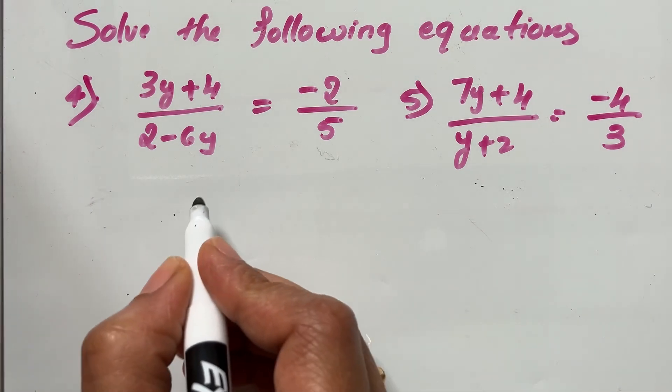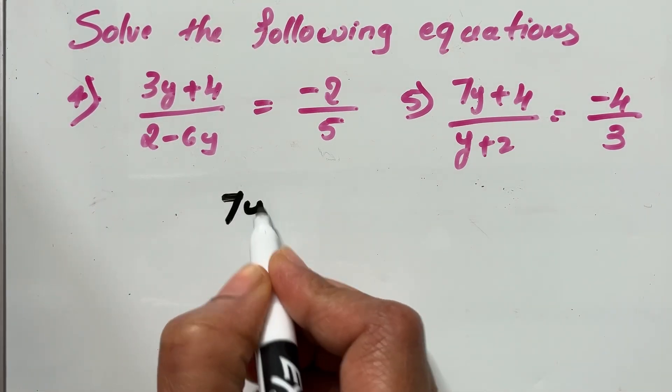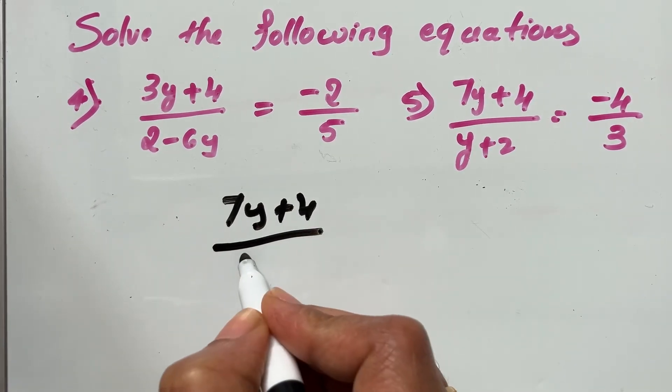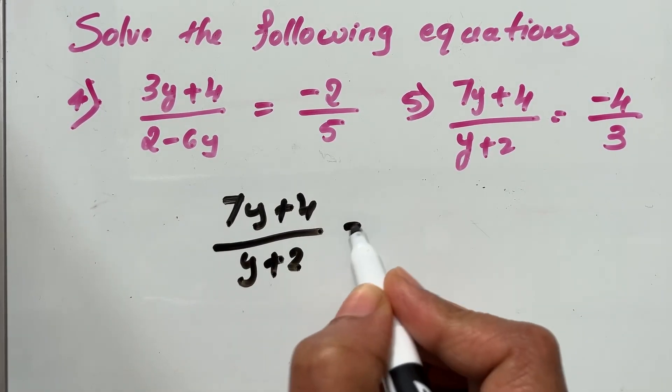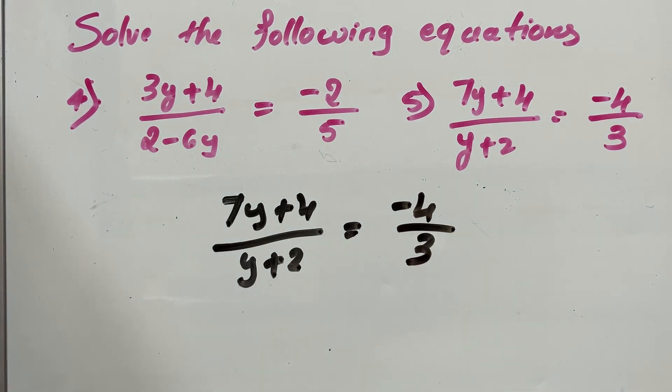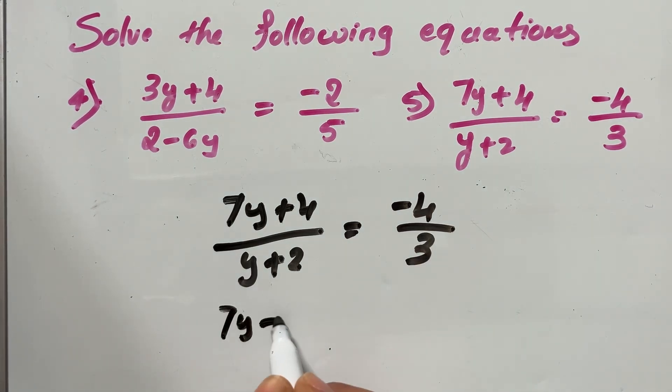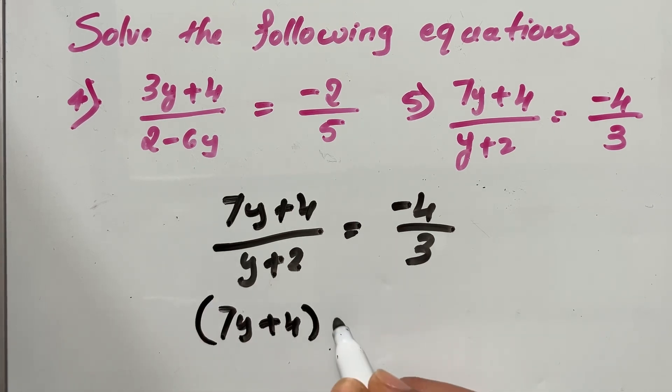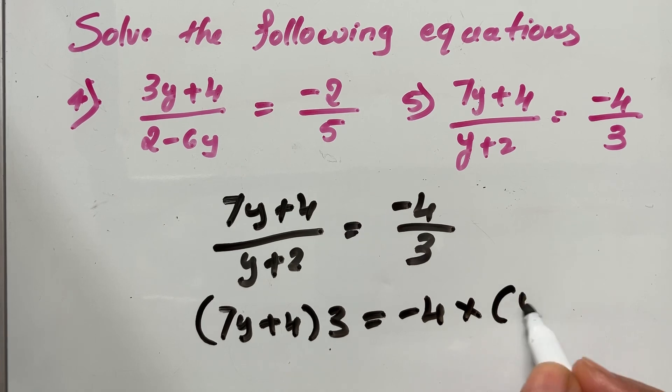That is question number 5. What is given? 7y plus 4 divided by y plus 2 is equal to negative 4 divided by 3. Again, cross multiplication. 7y plus 4 multiplied by 3 is equal to negative 4 multiplied by y plus 2.